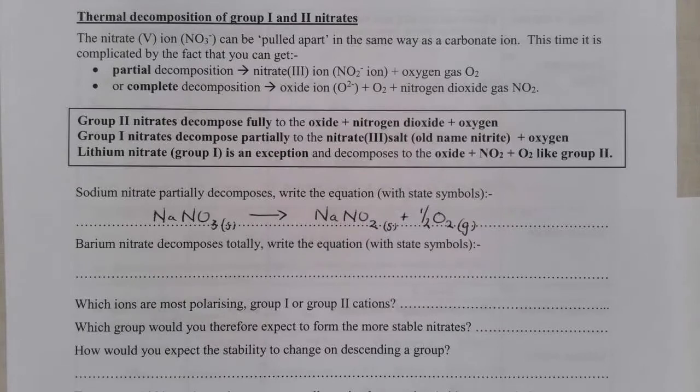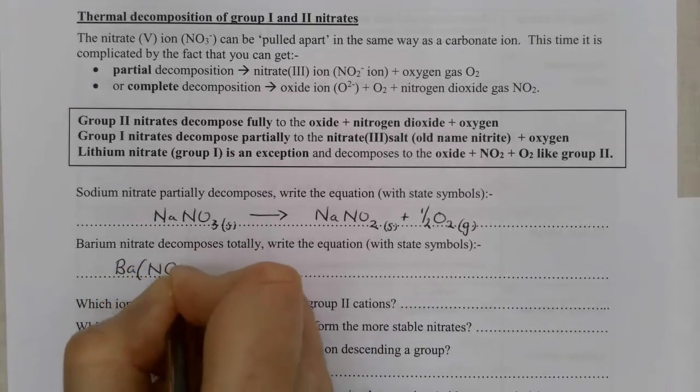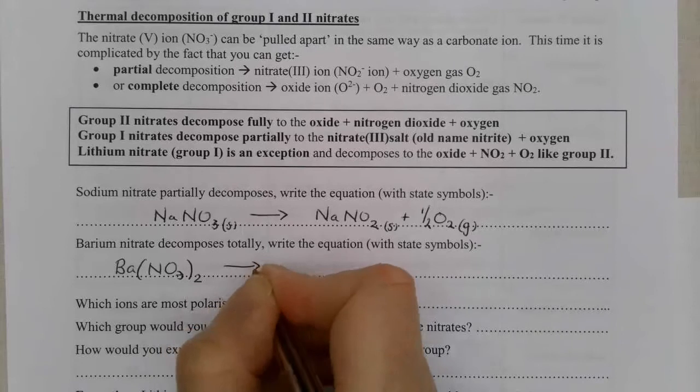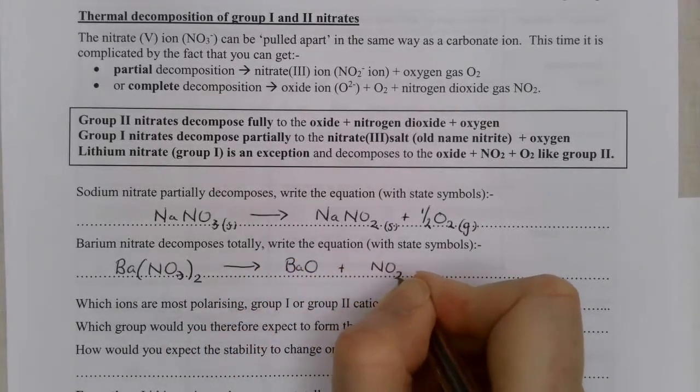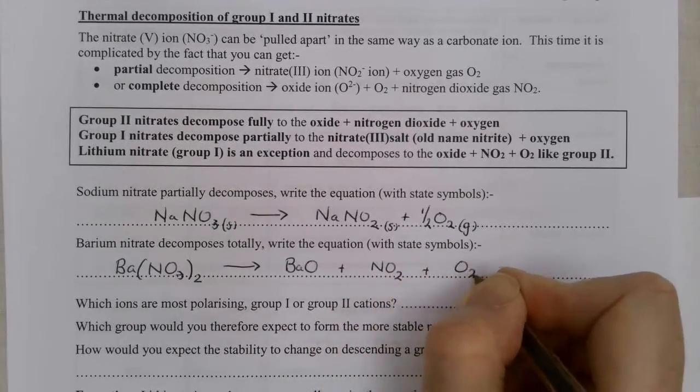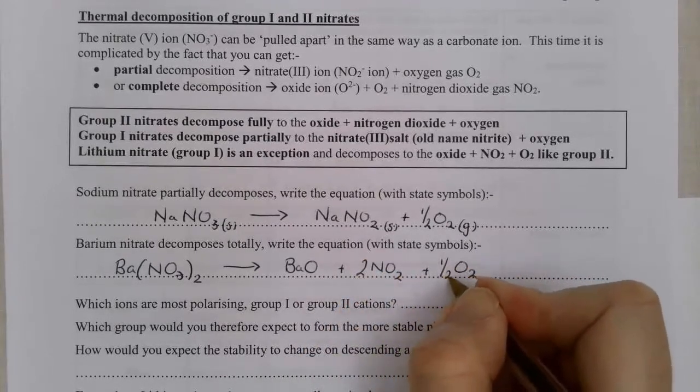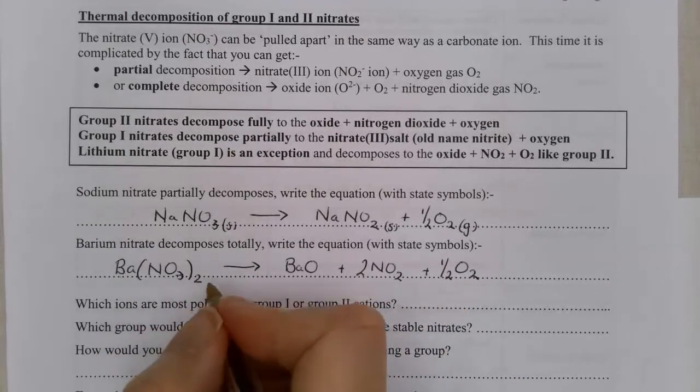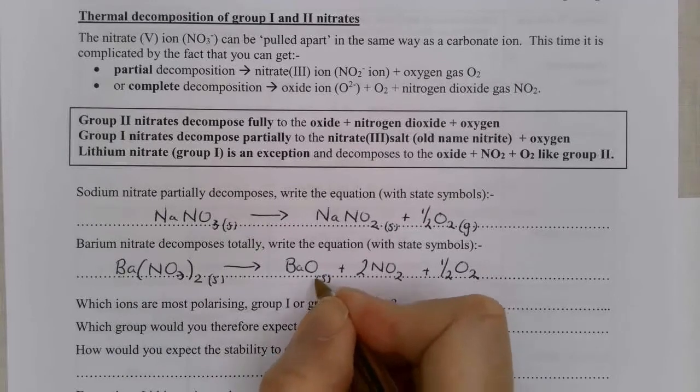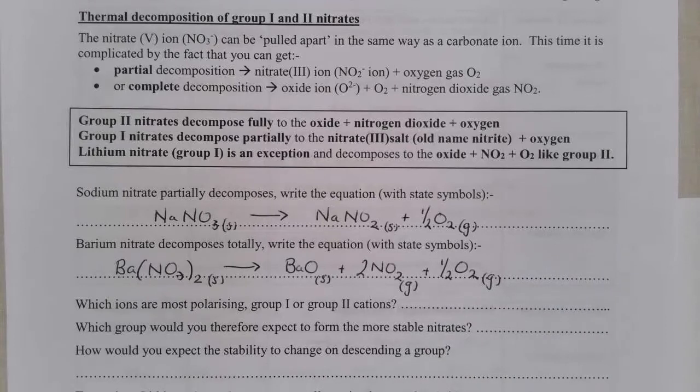Barium nitrate on the other hand is a Group 2 nitrate and it will completely decompose. So I've got barium nitrate, got 2 there, and that's going to turn into the oxide and nitrogen dioxide and oxygen gas. Again to balance it I'm going to get 2 there and a half there, or I could type 2, 2, 4, and then 1 oxygen. Again this is my solid, gives me solid barium oxide, gaseous nitrogen dioxide, and gaseous oxygen.